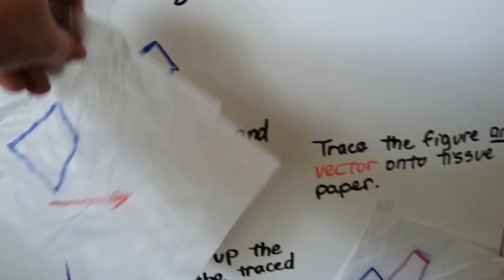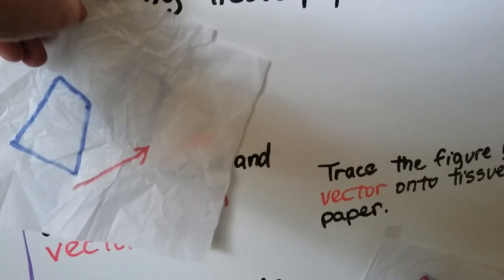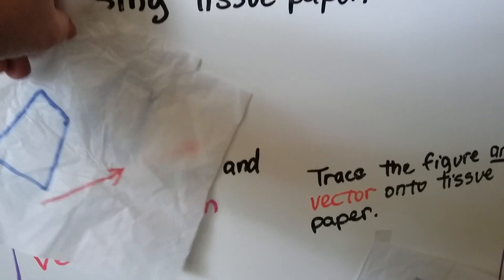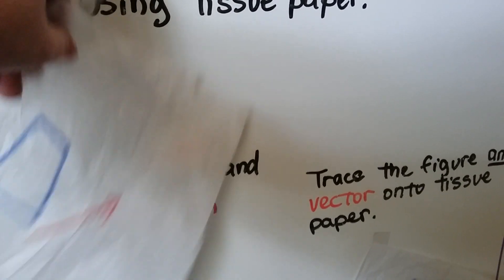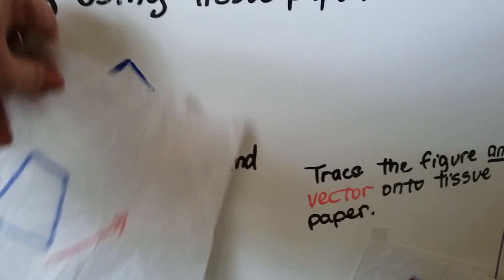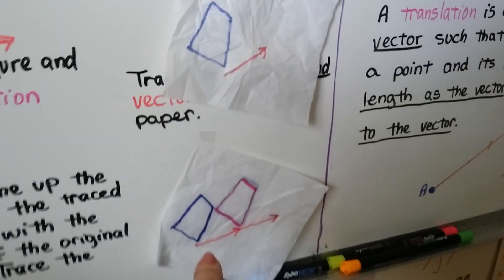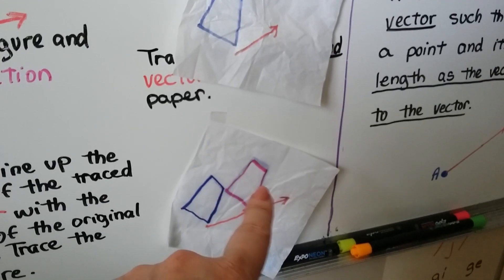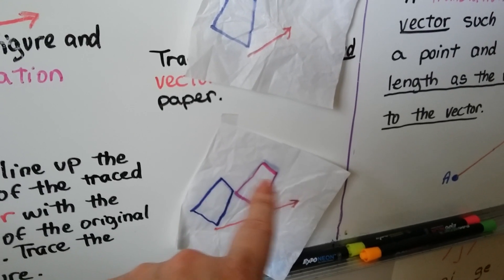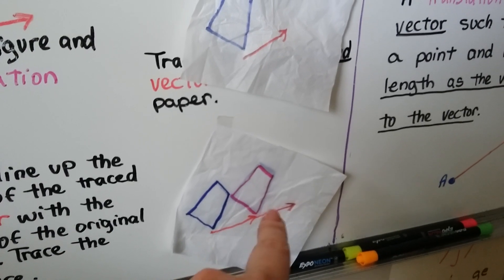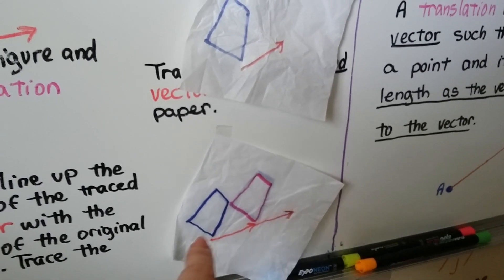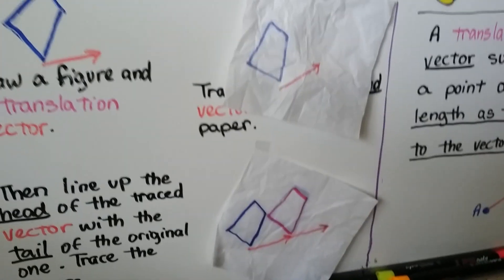We're actually tracing it a second time. But we're making it so that the tail of this vector matches the head of this vector. We're going to get the two figures with the two vectors like this, just as if the vector was one long continuous one.